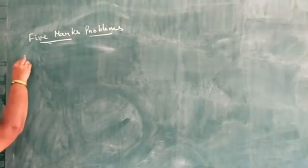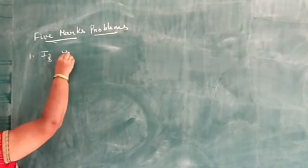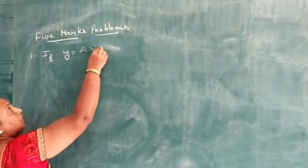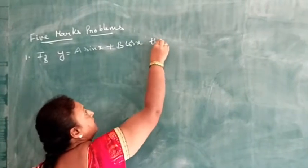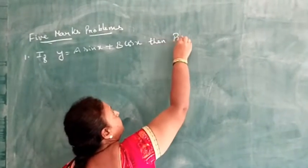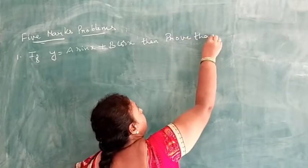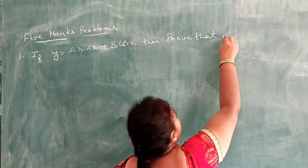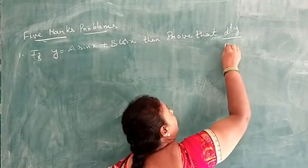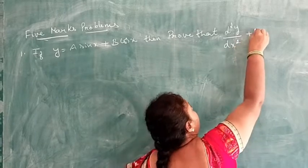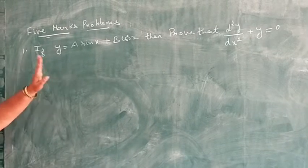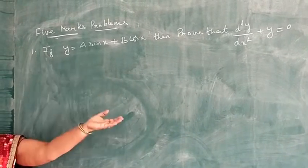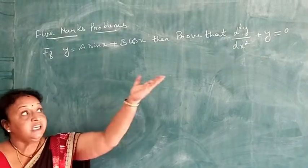Next 5-mark problem: if y equals a sin x plus b cos x, then prove that d squared y by dx squared plus y equals 0.